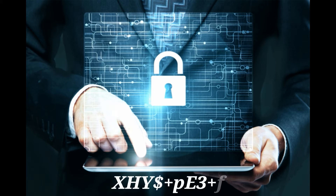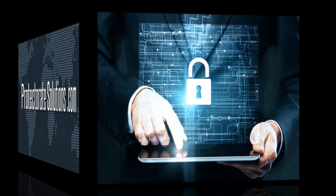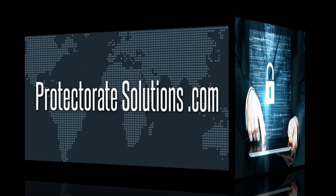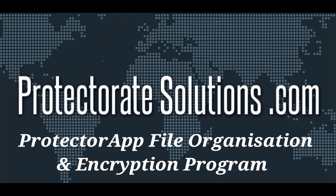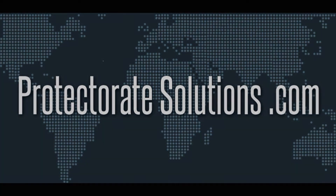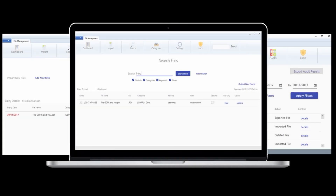In simple terms, encryption takes readable data and alters it so that it appears unreadable. An encrypted document can only be read by someone with the means to return it to its original readable format. Protectorate Solutions Limited has developed Protector App to aid controllers and data protection officers in mitigating the risks associated with the processing of personal data.